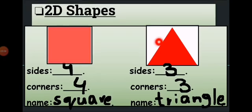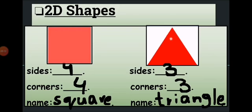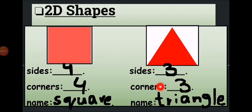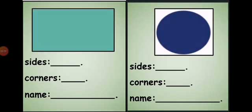Do you know why we call this shape a triangle? 'Tri' means three and 'angle' means angle. An angle is the point where two lines meet. In this shape there are three angles — that is why we call it a triangle.